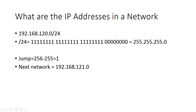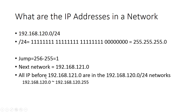So all IP addresses before this network address, starting from the given network address, are in the given network's address range. All IP addresses before 192.168.121.0 are in the given network 192.168.120.0/24. That means the IP addresses starting from 192.168.120.0 go up to 192.168.120.255.